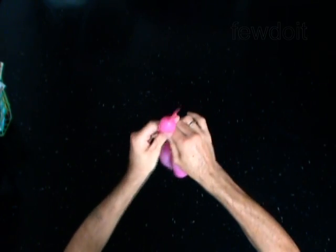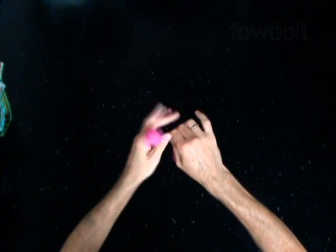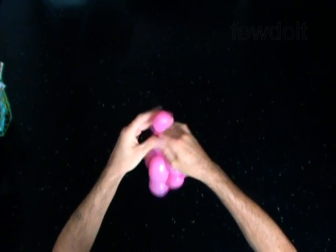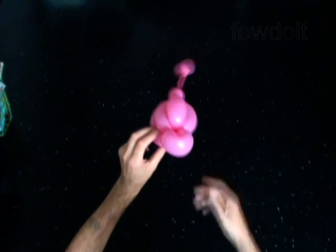You can make the funny tail. Split the ninth bubble in two and pump the tenth bubble to the end of the balloon. You have made the funny tail.